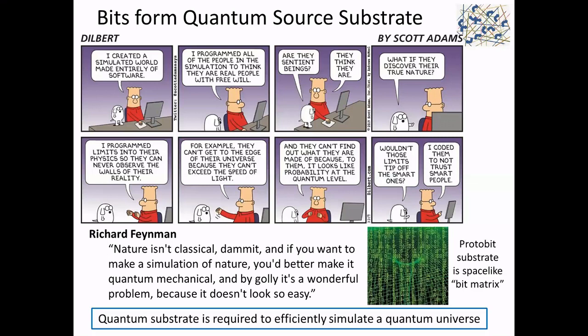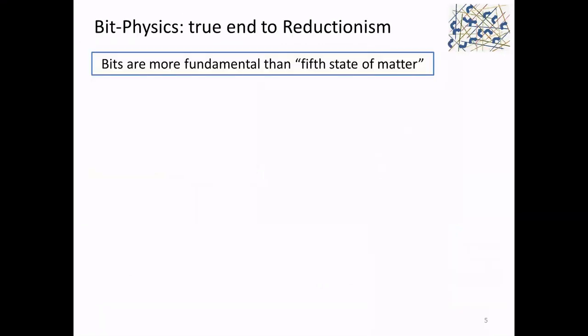Think of the movie The Matrix — a bit matrix simulating the universe — but to simulate the entire universe you need something more powerful. You need a quantum substrate that can sufficiently and efficiently simulate a quantum universe. I call this the protobit substructure, or bit physics — it's like a bit matrix. I actually think bits are more fundamental than a fifth state of matter, because bits are pre-matter, pre-space, and pre-time.